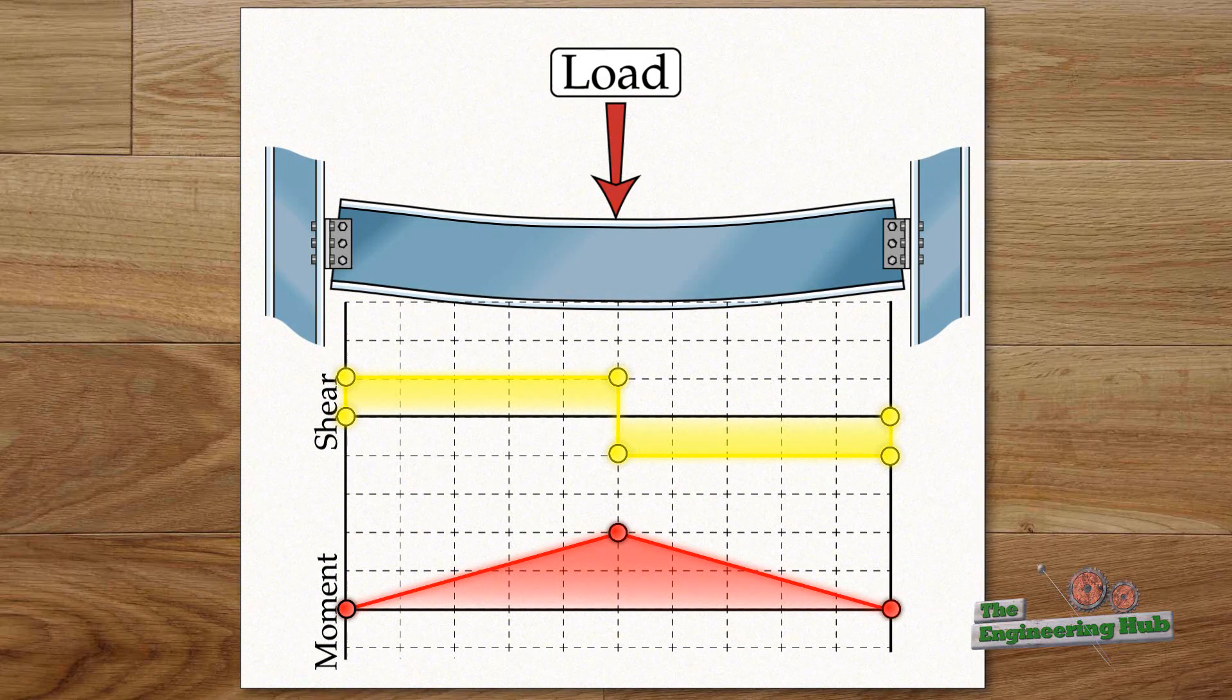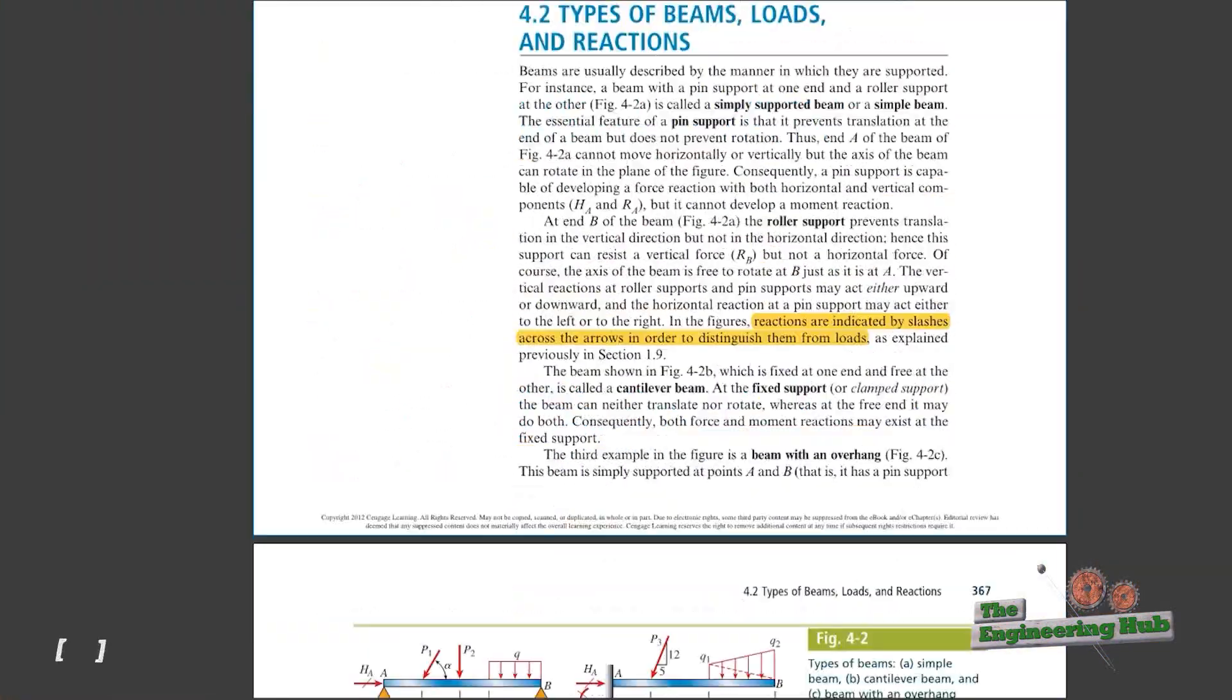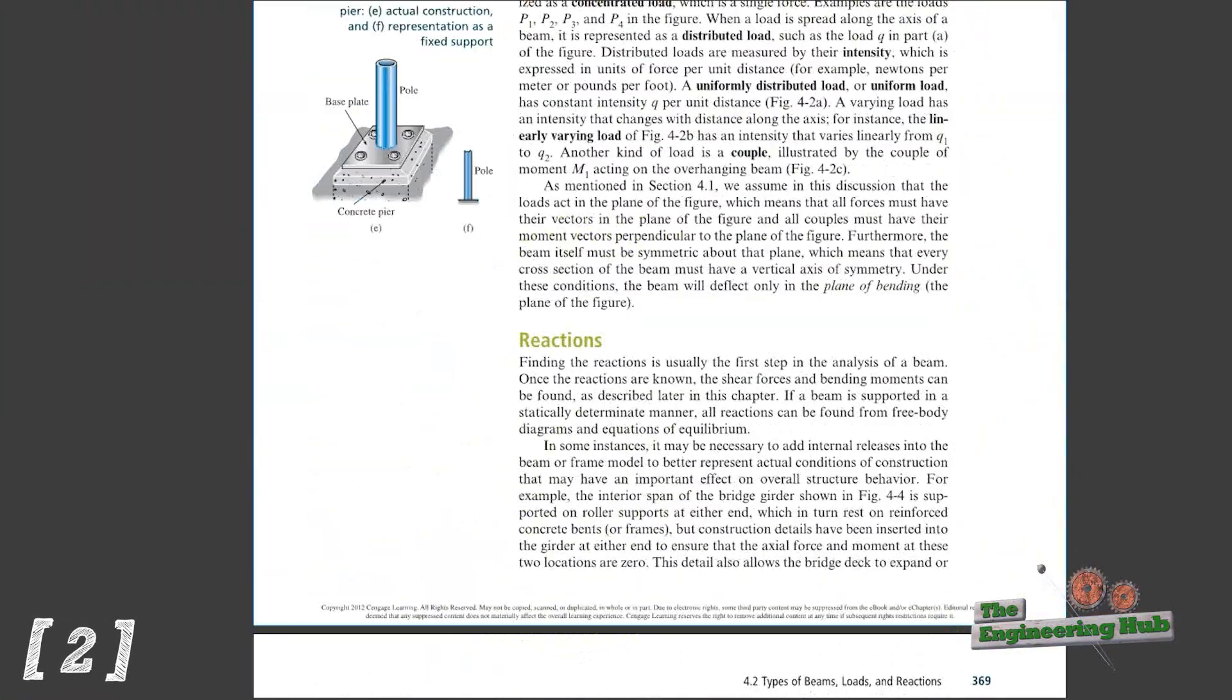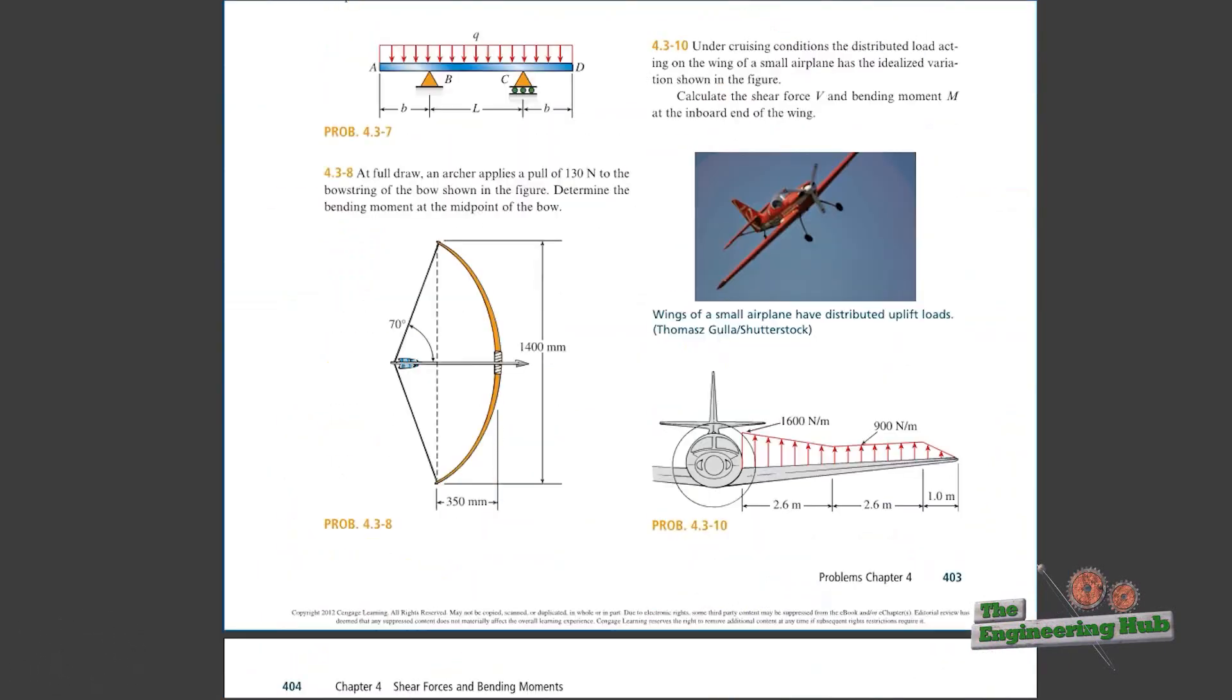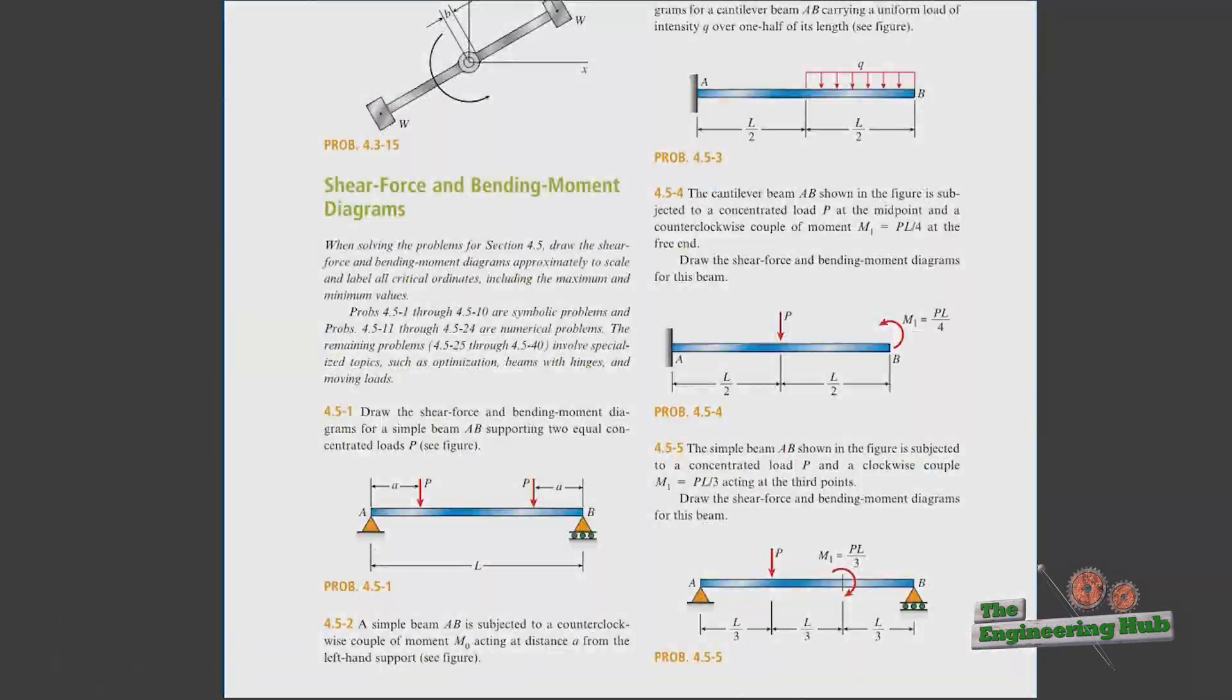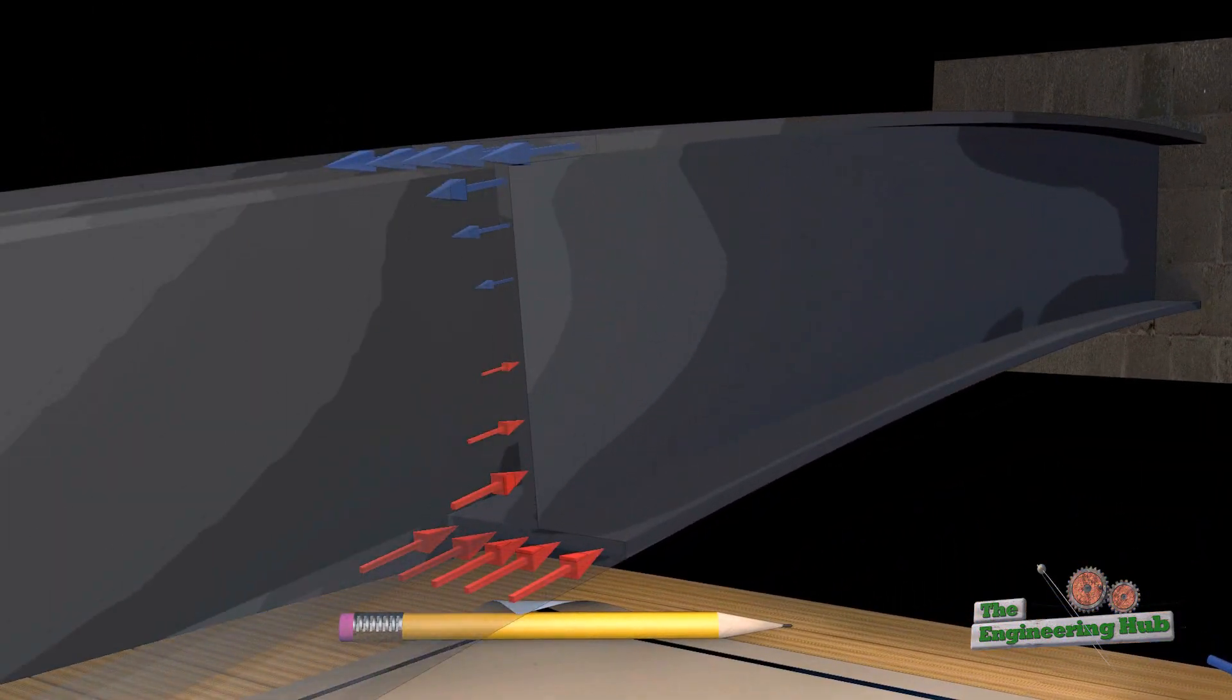I will not go into the calculations involved behind drawing bending moment diagrams since this is a qualitative video that builds intuition. The calculation procedure can be found in a classical Mechanics of Materials textbook. The most important thing here is to remember that the bending diagram represents the amount of bending felt by the beam, which directly translates to the magnitude of internal longitudinal force.